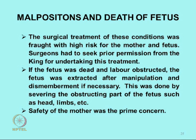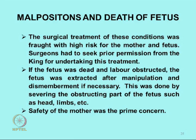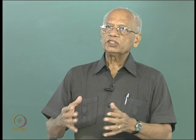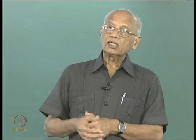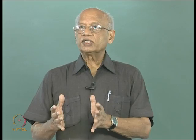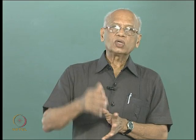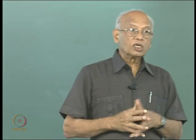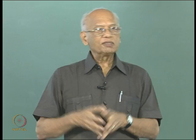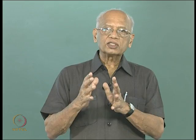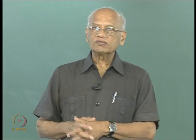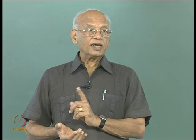Then we have malpositions and death of the fetus — very severe conditions. In obstructed labour, if the head, shoulder, or transverse lie of the fetus prevents progress, the woman's life is in danger. Surgeons would be called, and if the baby is nearly dead, they had to perform the drastic operation of dividing the obstructing part — whether shoulder or head — sometimes crushing the head, so that the obstructing part is removed, the fetus taken out, and the mother's life saved. Before doing this, the surgeon had to obtain royal permission.